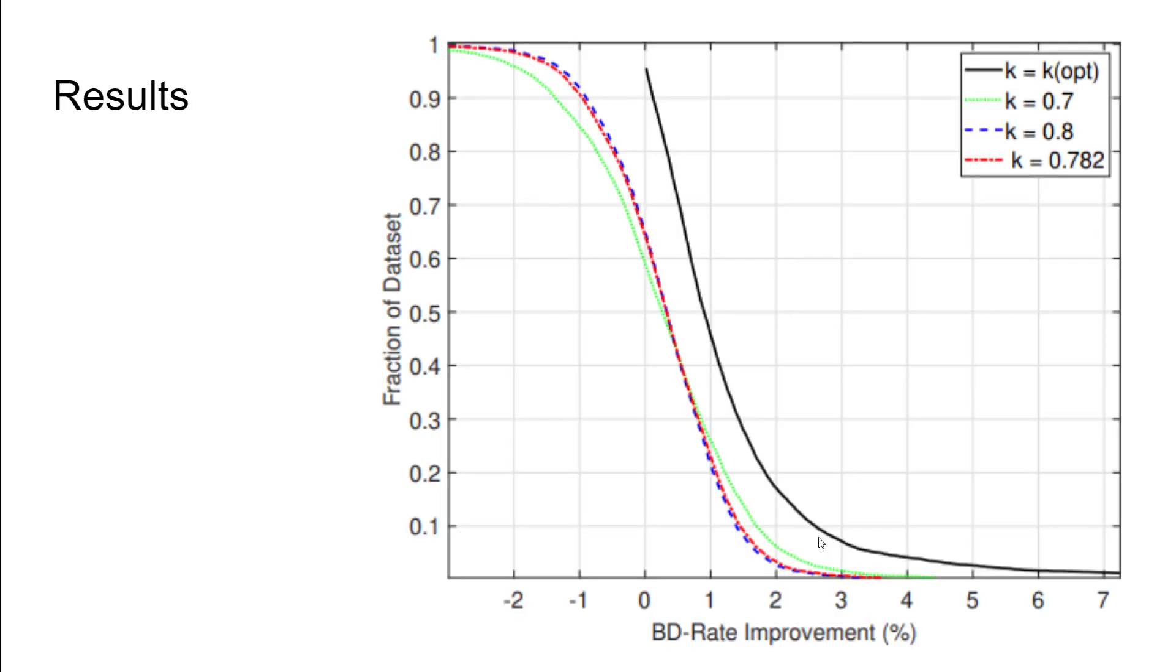However, these don't tell the full story. We can see the direct optimizer being the black line, and what happens if we had every clip have the same value for k to see the BD rate improvement. On the good side, we have roughly two-thirds of clips which have some form of improvement. But it also means that the other third of the corpus does not like the new adjustment and performs poorly compared to the original settings of the codec.